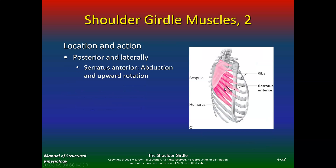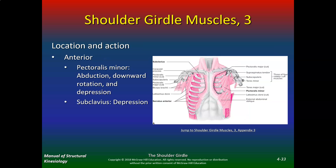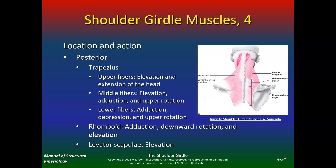For the serratus anterior, in movement anatomy you need to know location and actions. You should know the origin and insertion, but I'm not going to quiz you on origin and insertion — that's anatomy 101. Pectoralis minor does abduction, downward rotation, and depression. Subclavius does depression.